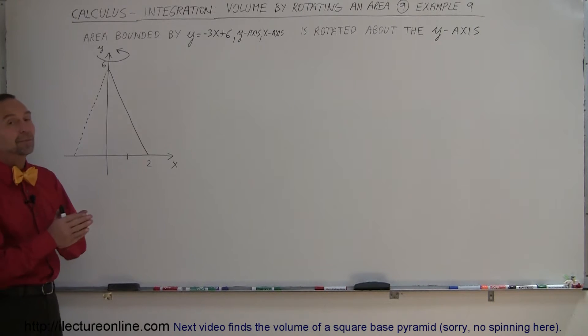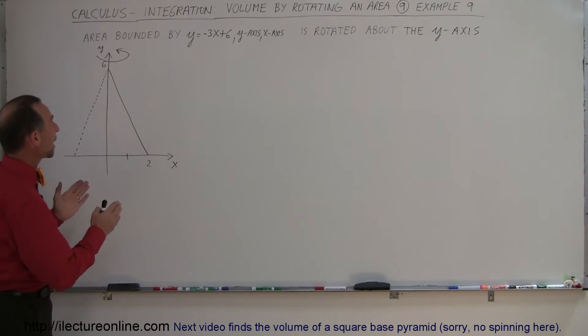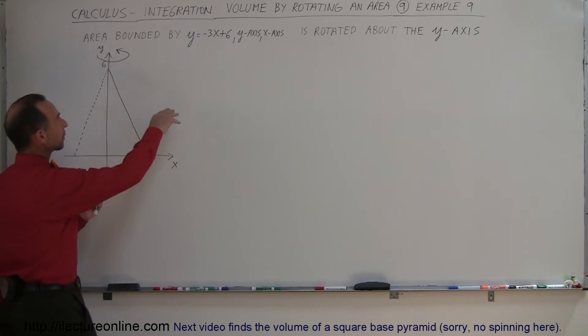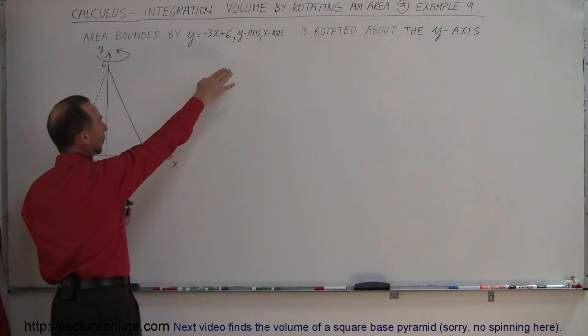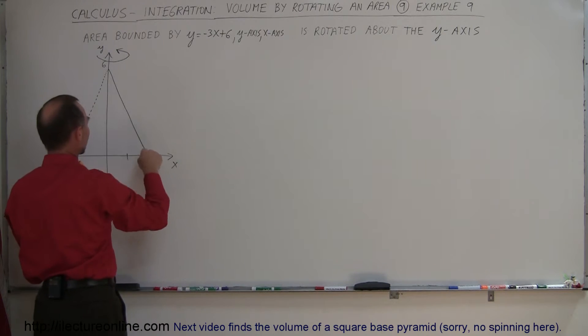Here's a next example of how to find the volume of an area that's being bounded by some equations and rotated about an axis. So here we have the equation y equals minus 3x plus 6. And we're also bounded by the y-axis, the x-axis, so that gives us this little triangle right here.